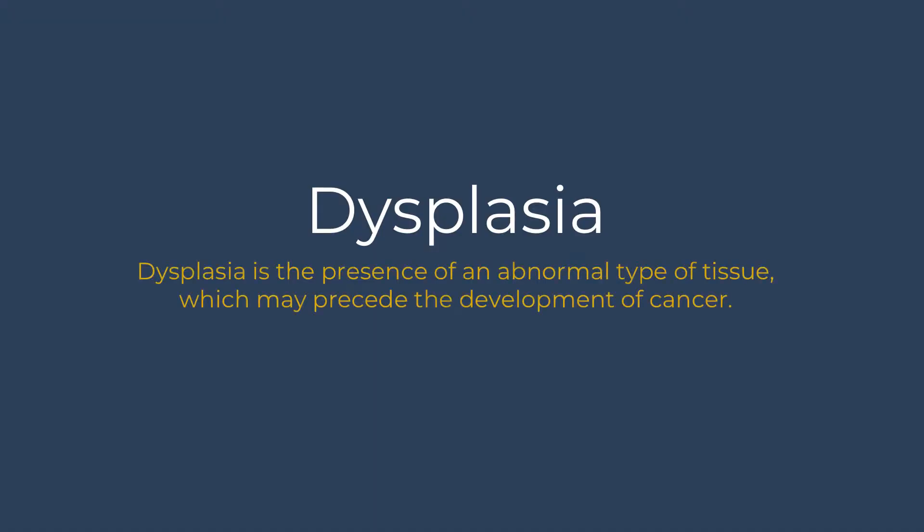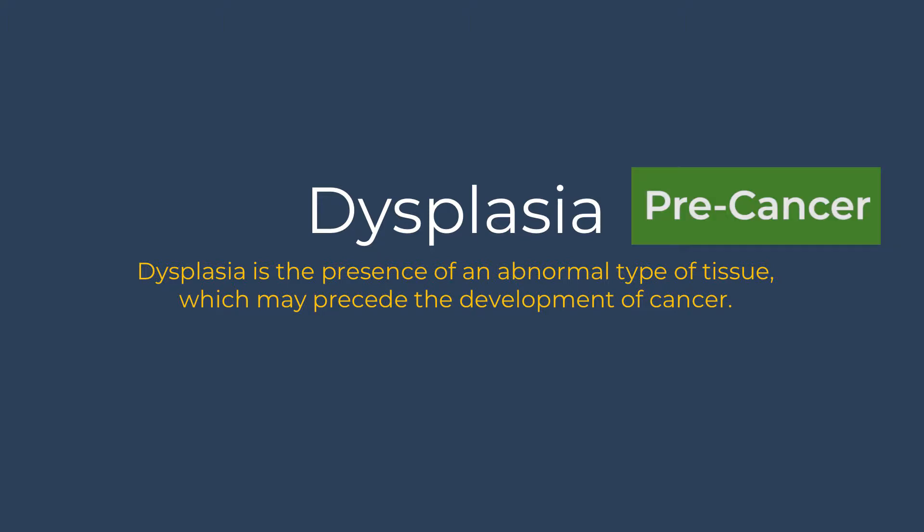Dysplasia is something that a pathologist defines as an abnormal presence of cells within tissue that typically is a stage that precedes cancer. Colonic dysplasia is something that we are worried about in patients with inflammatory bowel disease, but dysplasia can be found in multiple tissue types throughout the body.